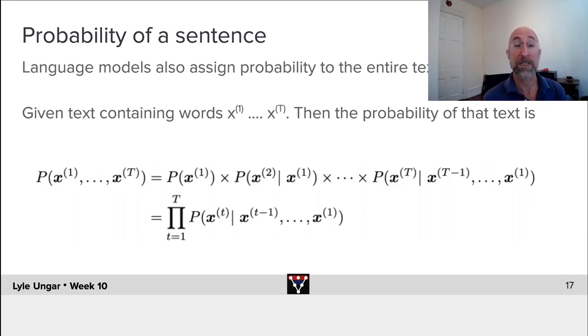We can also take those exact same language models and say I'd like the probability of a whole sequence of capital T words or capital T embeddings of words. And now, that's just the probability of the first word, times the probability of the second word given the first word, times the probability of the T-th word given all the words behind it. So, given a language model, you can actually also compute probabilities of sentences. We will find that although this is not directly useful, it's useful to use embeddings of these that take embeddings of individual tokens to do embeddings of sentences, which we can then use for classifying sentences.